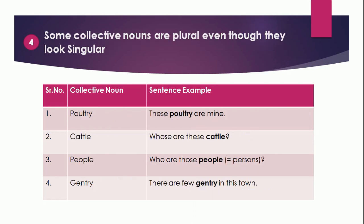Point 4: Some collective nouns are plural even though they look singular. For example: 'poultry' — 'This poultry are mine'; 'cattle' — 'Whose are these cattle?'; 'people' — 'Who are those people?'; 'gentry' — 'There are few gentry in this town.' So do remember, these collective nouns are plural.